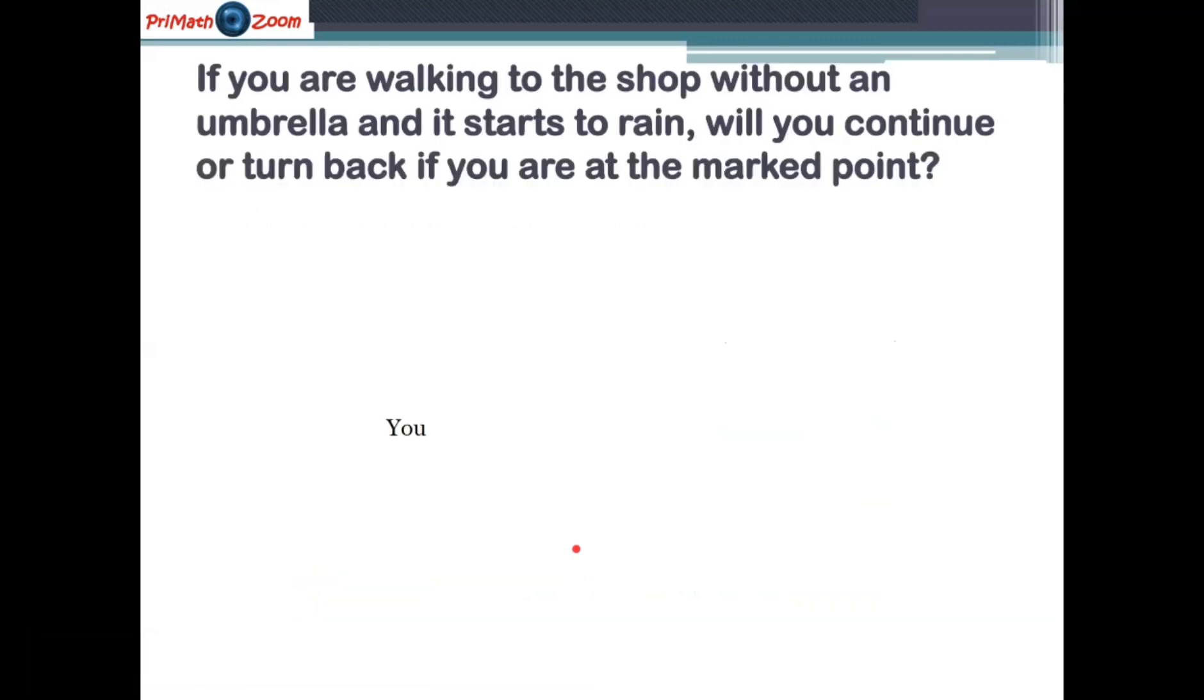Now, here we have a scenario. If you are walking to the shop without an umbrella and it starts to rain, will you continue or turn back if you are at this marked spot? This is where home is and this is where shop is. And that's the distance from home to shop.